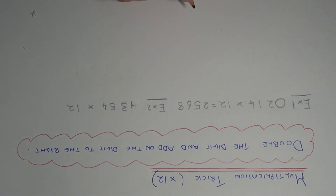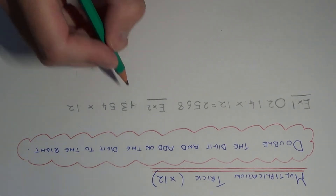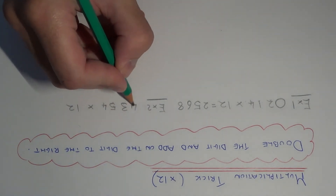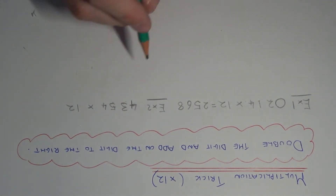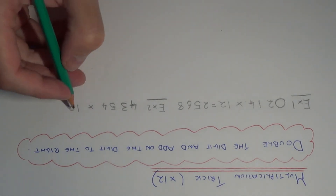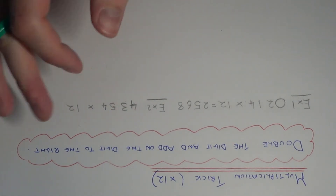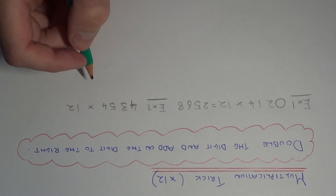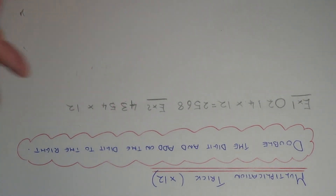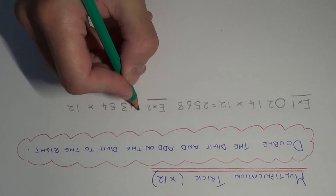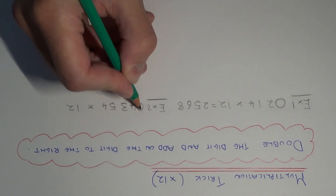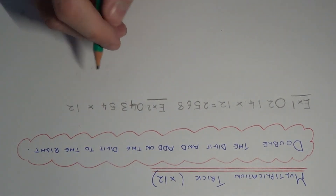Let's move on to example 2. This time we need to work out 4,354 multiplied by 12. The first thing we need to do is put a 0 before the number.